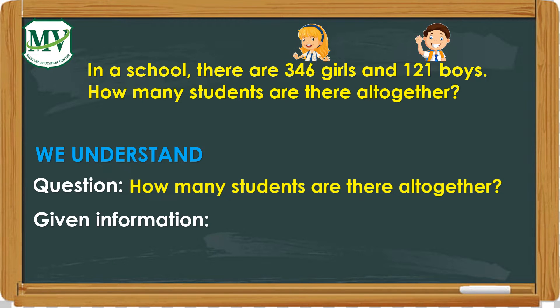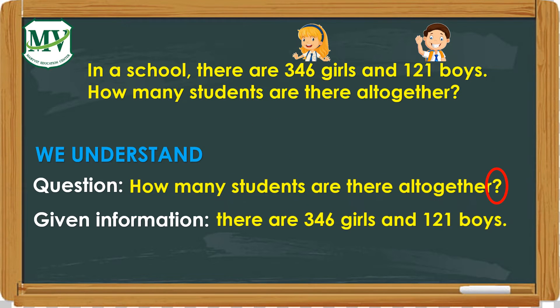Always look for the question mark sign to help you identify the question. Given information: there are 346 girls and 121 boys.